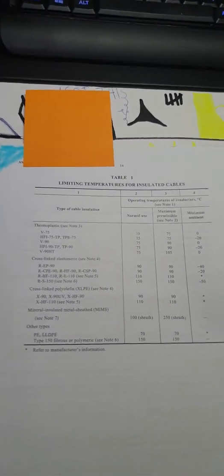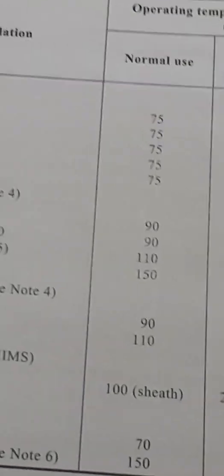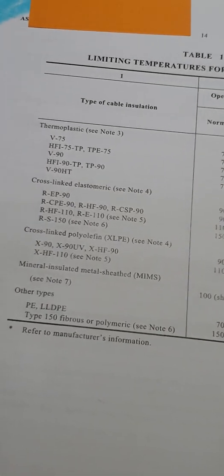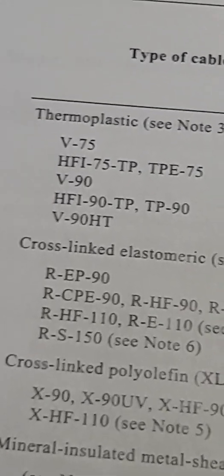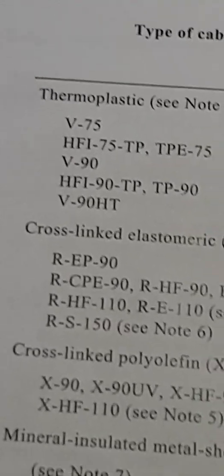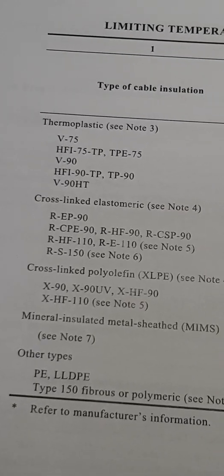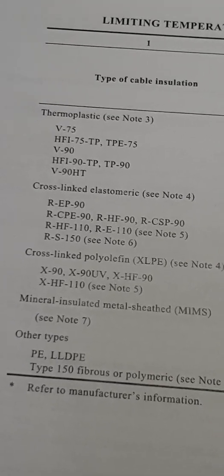The first table I'm going to go to is Table 1, which is to do with temperature readings. The first column has 'normal use' — that's where the cable temperature is most important. For example, we can see V75 and V90. V90 means 90 degrees and V75 means 75 degrees. These are the temperature ratings we'll see in questions when we look at cable selection. We need to know the temperature rating of the cable to pick the right column.